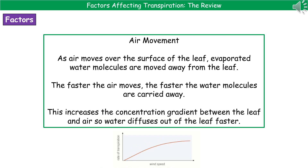The second factor is air movement. As air moves over the surface of the leaf, evaporated water molecules are moved away from the surface. The faster the air is moving, the faster the water molecules are carried away. As a result, we end up with a steeper concentration gradient between the leaf and the air, and water diffuses out of the leaf faster.